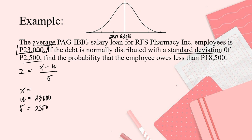Because we subtracted from the mean. If on the other side, on the right, add P2,500. And that is P25,500. And then here, it says less than P18,500 pesos. So since P18,500, let's say this is P18,000 because we're subtracting P2,500. P23,000 minus P2,500, P20,500.